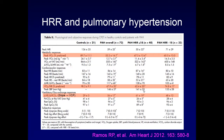Heart rate recovery also mirrors other surrogate endpoints in a CPET: patients with poor heart rate recoveries have lower predicted peak VO2 levels, lower stroke volumes — since O2 pulse, which is VO2 divided by heart rate, is a surrogate marker for stroke volume — and higher VE/VCO2 levels.